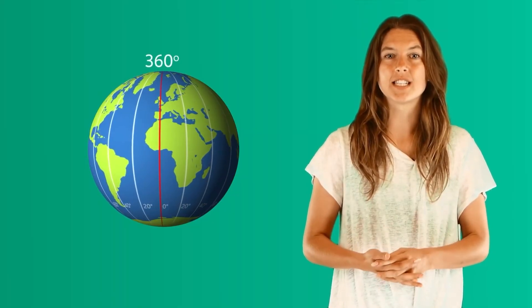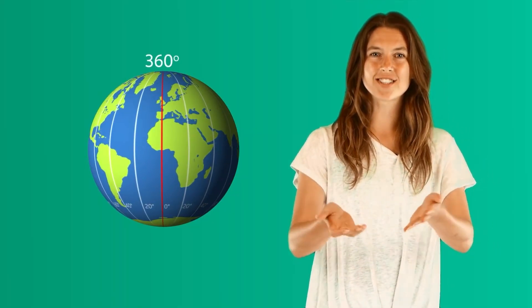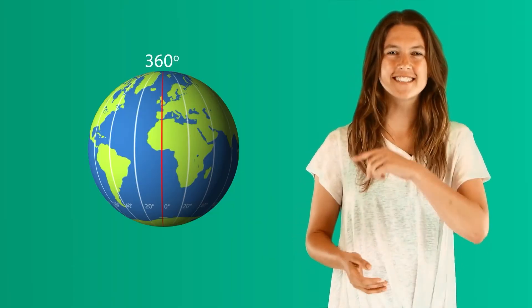Can you guess why? That's right. It's because the distance around the Earth's measure is exactly 360 degrees, a full circle. Hey, you just noticed what scientists discovered years ago. The Earth is round.